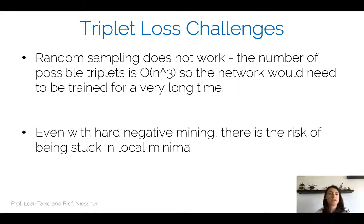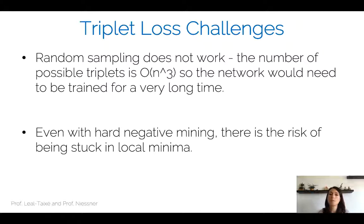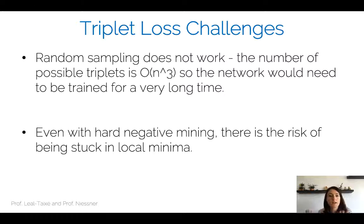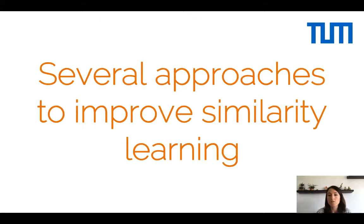The triplet loss is not perfect. Random sampling of triplets does not work well because the number of possible triplets is huge — even with a training set of 1000 images, the number of triplets is enormous. With random sampling, hard cases may never be seen. And even with hard negative mining, you can get stuck in local minima.